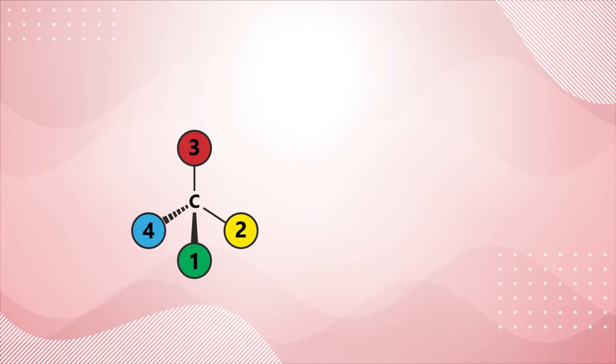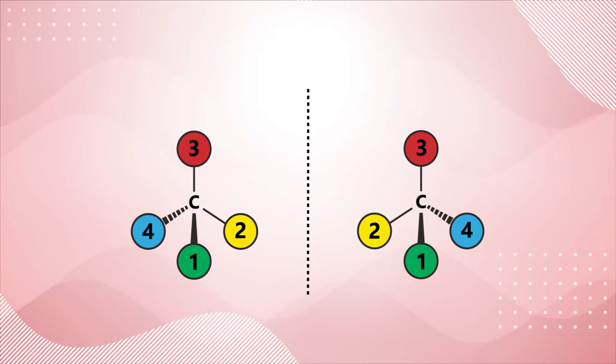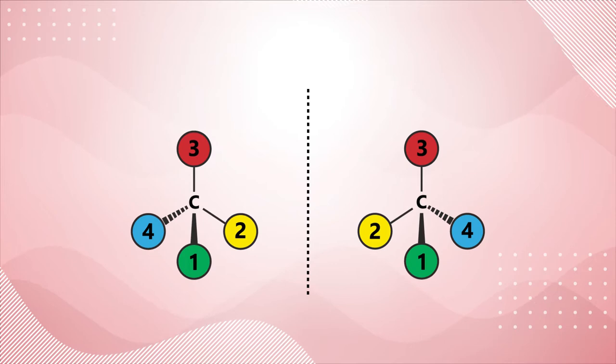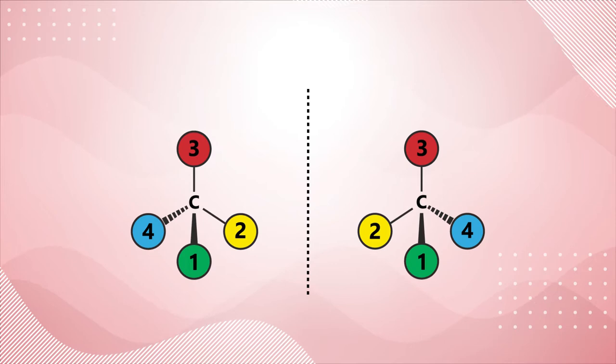So how does chirality play a role in drug development? Molecules, drugs, can also be chiral. A drug with a chiral center exists in two forms which are mirror images of each other. The two forms are called enantiomers, denoted by an S or an R, and are non-superimposable.